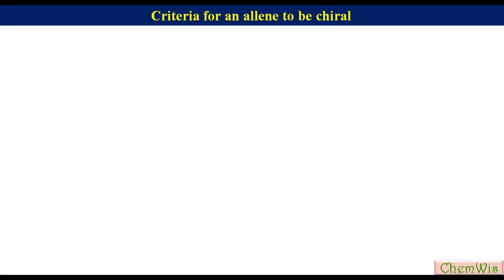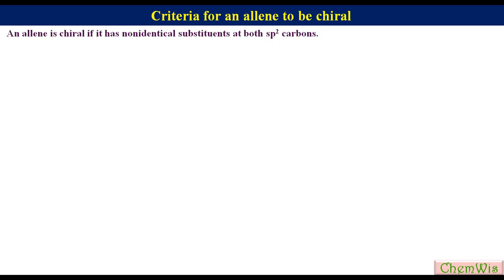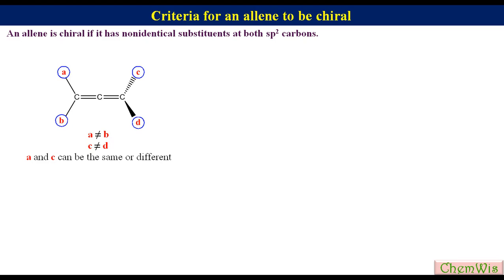Criteria for an allene to be chiral: just like biaryl systems discussed in the last lecture on atropisomerism, appropriately substituted allenes show chirality due to the presence of a chiral axis. An allene is chiral if it has non-identical substituents on both the sp2 carbon atoms. The chiral allene can be represented by a general structure where A and B must be different, and C and D must be different, but A and C can be the same or different, and B and D can be the same or different.